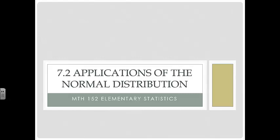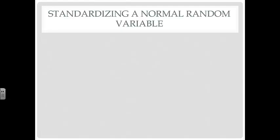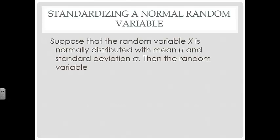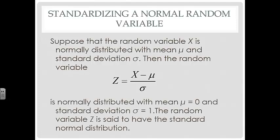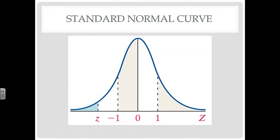Section 7.2 covers applications of the normal distribution, focusing on standardizing the normal random variable using Z-scores. If X is normally distributed with mean mu and standard deviation sigma, then Z equals X minus mu divided by sigma. That random variable Z is normally distributed with mean 0 and standard deviation 1, giving us the standard normal distribution.